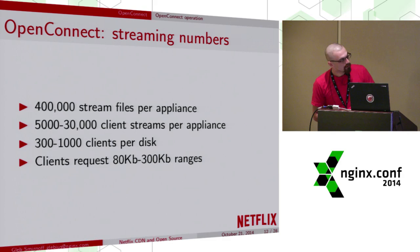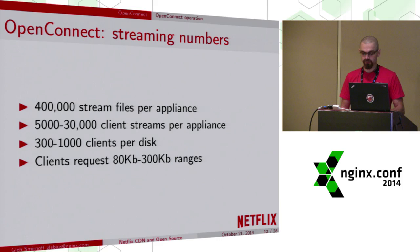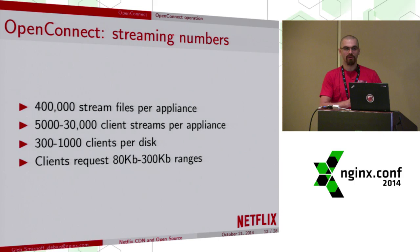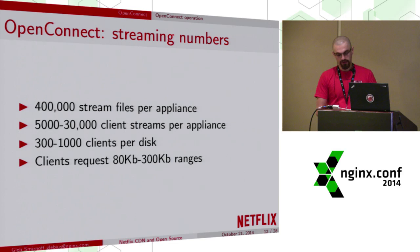Some details on how the streaming works: we usually serve up to 30,000 TCP connections per appliance. Clients request data in quite small chunks, usually around 100 kilobytes, which is quite far from being optimal for the server. Although we've got some popular content, the vast majority of data requested by clients is not found in the operating system memory cache, so we need to read it from disk directly to network. Streaming several tens of gigabits of traffic per second with such an unfriendly request pattern is not an easy task.